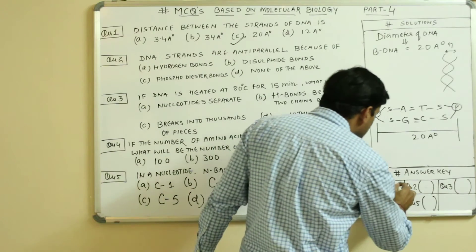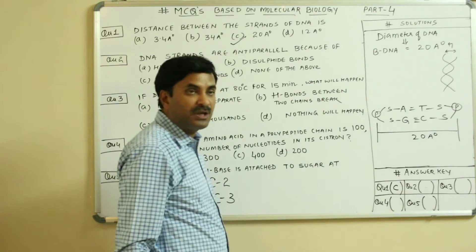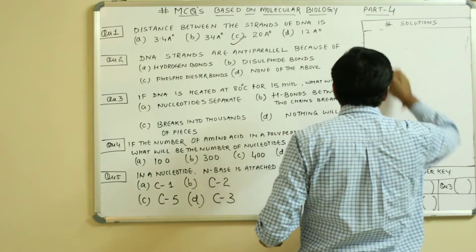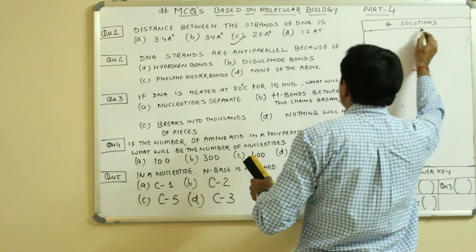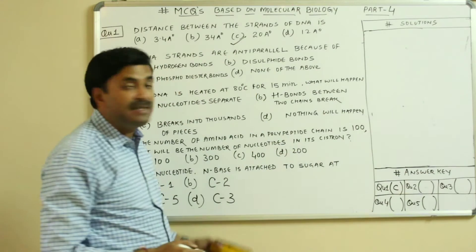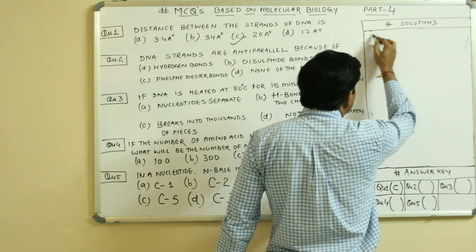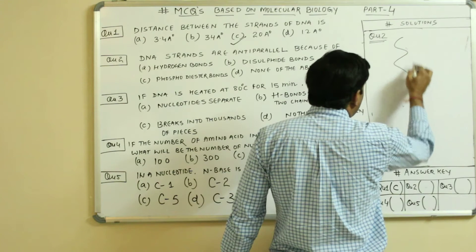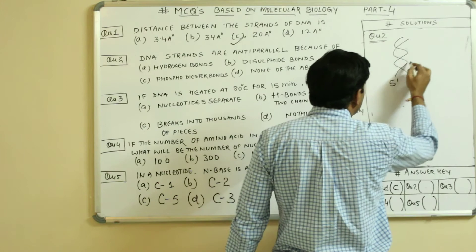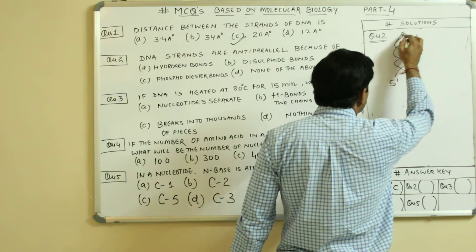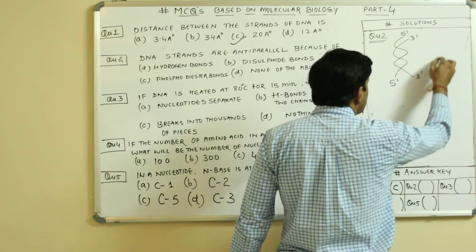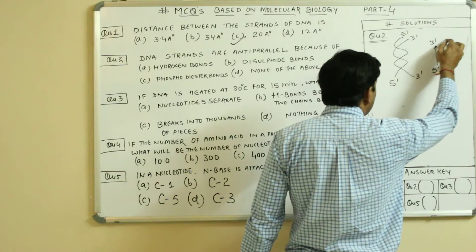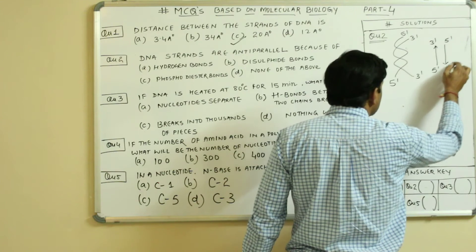So the answer to question number one is C — 20 Angstroms. Now the second question: DNA strands are anti-parallel. We know very well that the two strands of the DNA are anti-parallel. Both chains run anti-parallel to each other — if one end is 5 prime, the other is 3 prime.